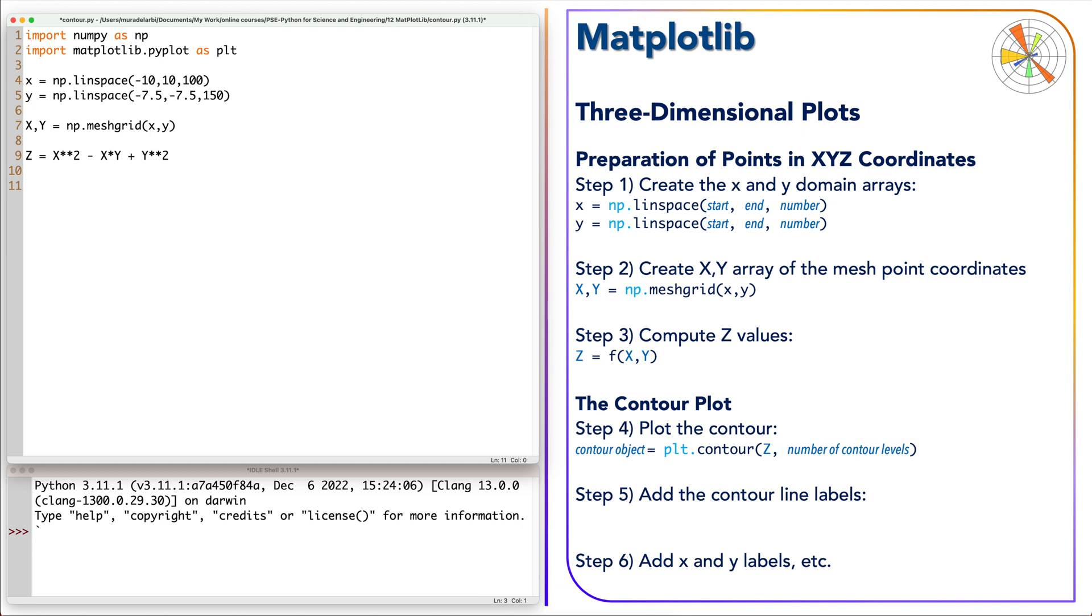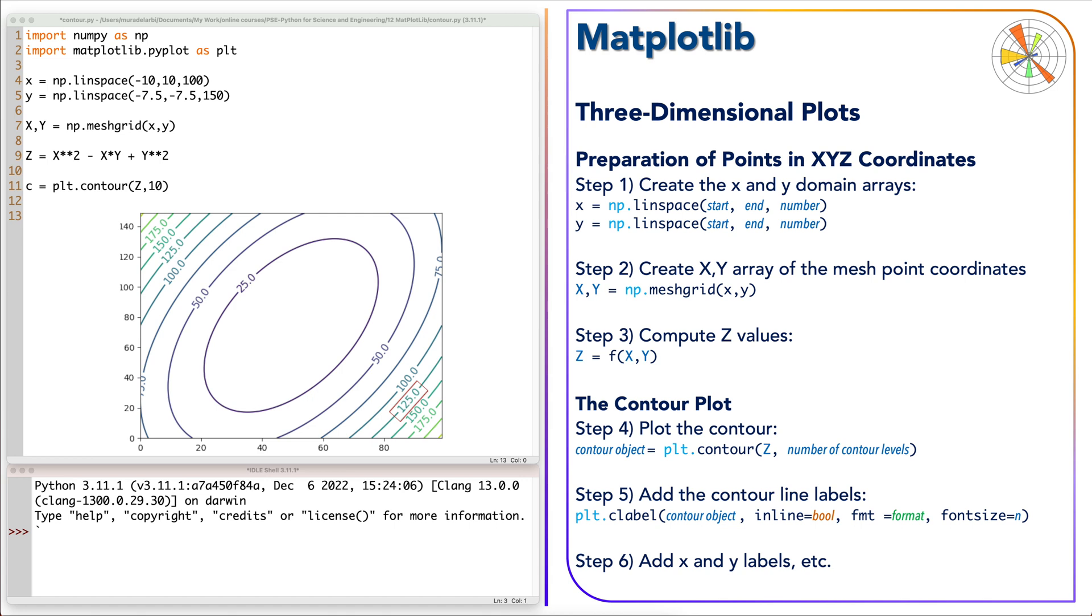X capital and Y capital can be added before Z, but they are optional. The function contour plots contour lines which need numeric labels that show each level. For that purpose it should be followed by clabel. The first argument in clabel is the contour object returned by the contour function. The option inline determines whether the line labels are written over the lines or within them. The option fmt formats the numbers in a similar way used in the Python print. The size of the contour line labels can be controlled by using the argument font size.